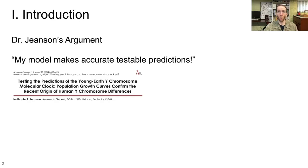What he's referring to here is this paper, Testing the Predictions of the Young Earth Y Chromosome Molecular Clock: Population Growth Curves Confirm the Recent Origin of Human Y Chromosome Differences. And I'm not going to go through all of the nuts and bolts right here, but I want to point out just one thing with his methodology that he's basing his predictions on.